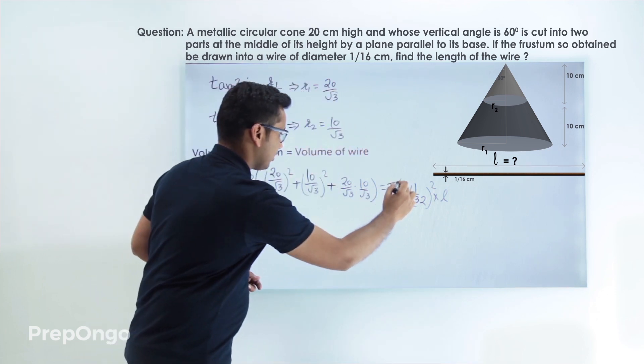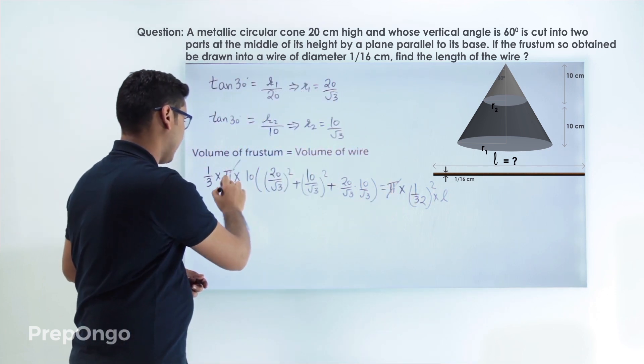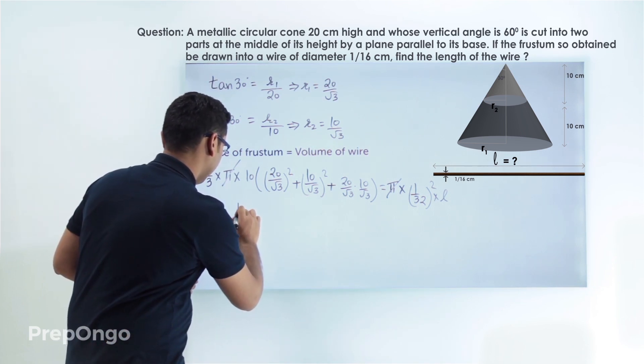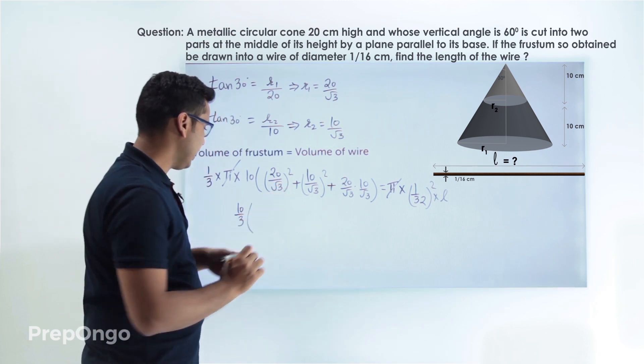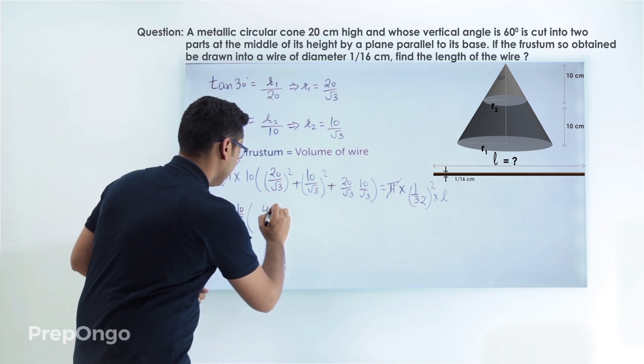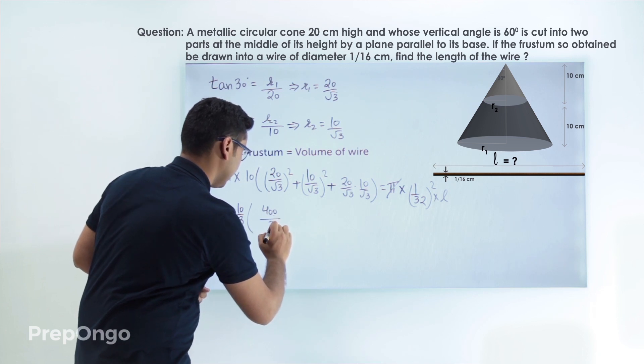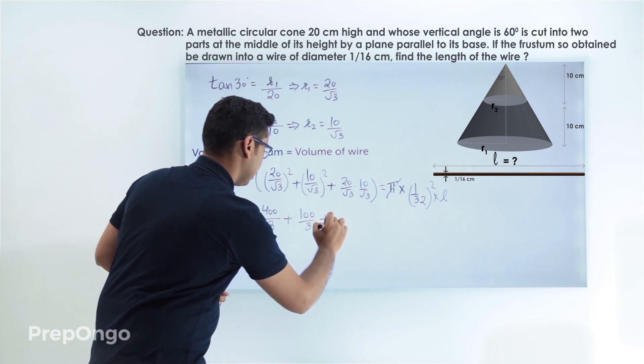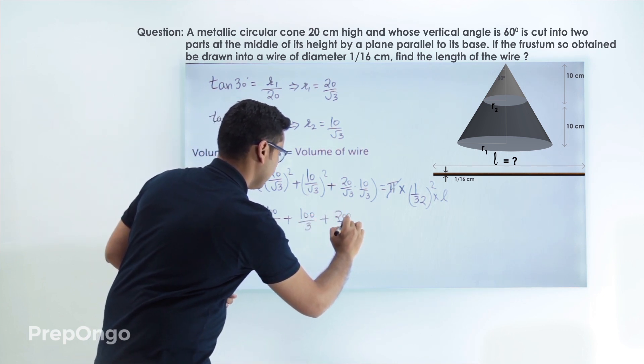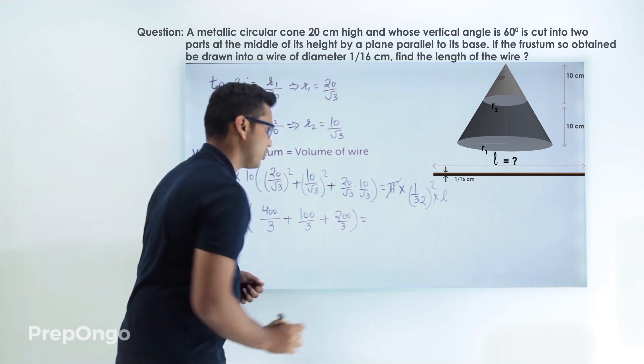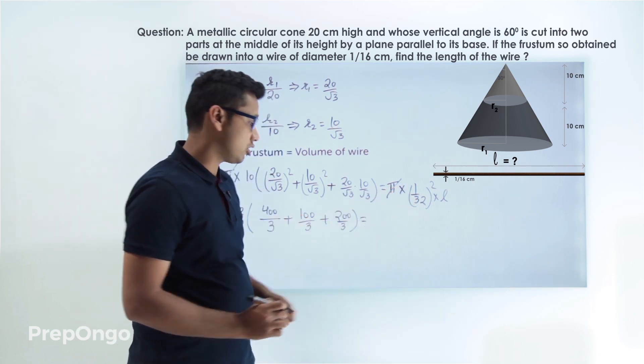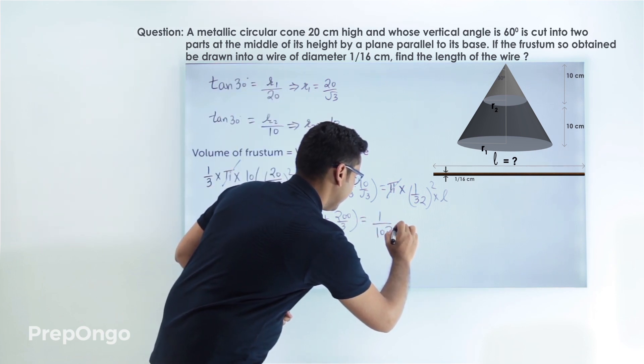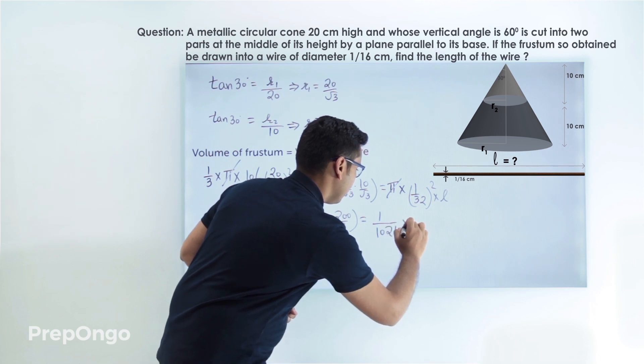And now let's solve this to get the value of L. Pi will get cancelled and let's simplify this term. So this is 10 by 3. This will come out to be 400. The square of 20 is 400 and root 3 square is 3. 100 upon 3 plus, this will be 200 upon 3 is equals to this will be 1 upon 32 whole square. So it will come out to be 1 upon, square of 32 is 1024, into L.